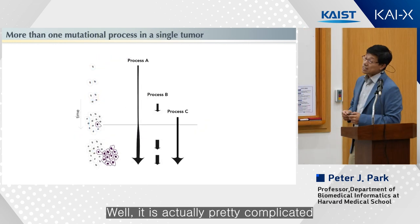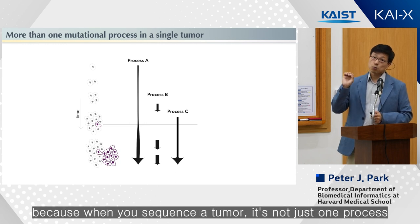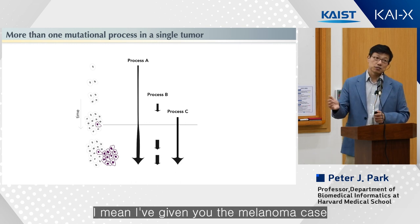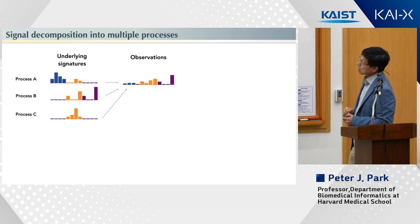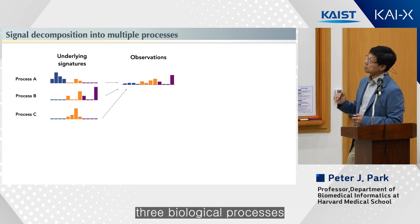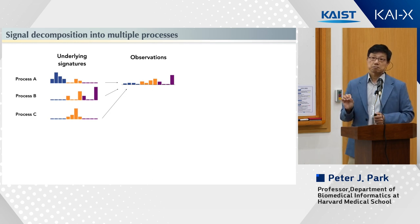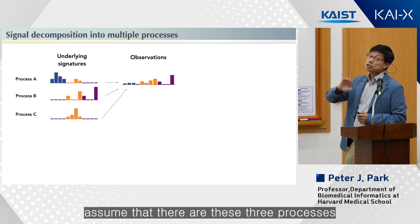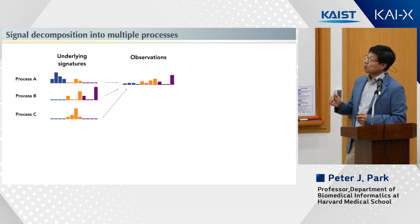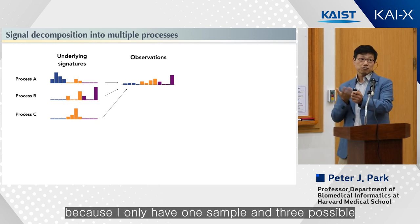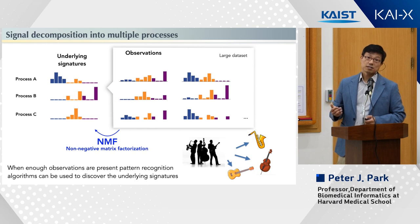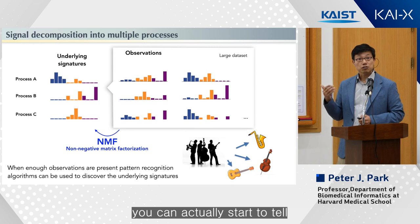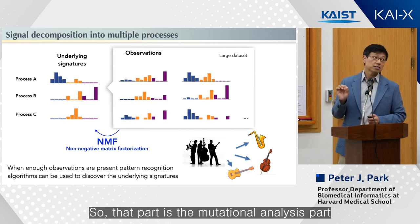How does this work? It is actually pretty complicated, because when you sequence a tumor it's not just one process. You have multiple processes acting at different times, for different durations, on different groups. Suppose you have three biological processes and you sequence one cancer case — you can't figure out what those three processes are because you only have one sample. But if you have a hundred or a thousand samples, you can actually start to tell which are the underlying processes. That's the mutational analysis part.